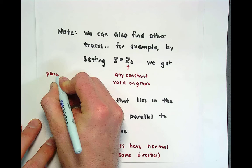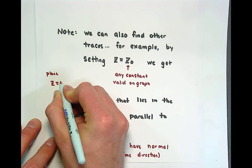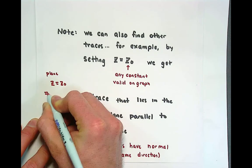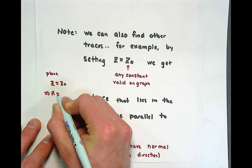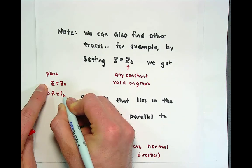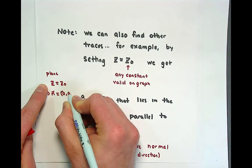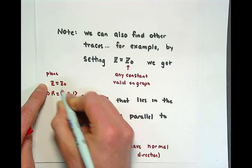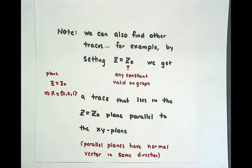This plane, the plane z equals z naught, has a normal vector, well let's see, no scalar on x, no scalar on y, one scalar on z, and that's the same normal vector as if you did the xy plane.